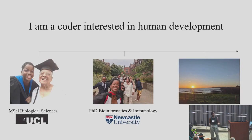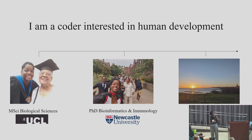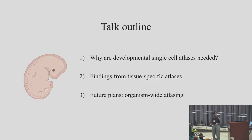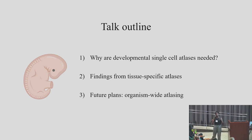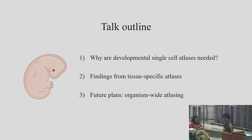A bit about myself: I'm a coder interested in human development. I started out with an undergrad and a master's in biology, then moved into bioinformatics for my PhD. I'm first gen, and I've stayed at the same institute and spread out a bit into the Sanger Institute now for my postdoc. Today I'll cover why single-cell analysis of human development is needed, key findings from tissue-specific atlases, and future plans for organism-wide atlasing.